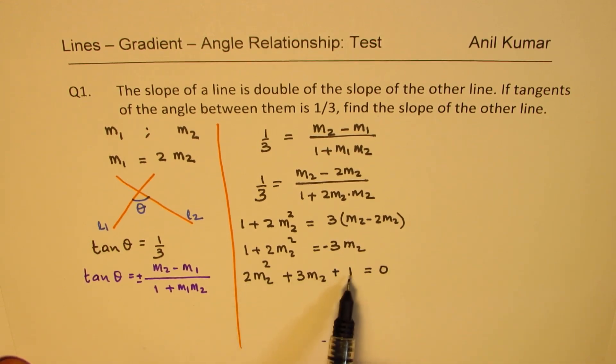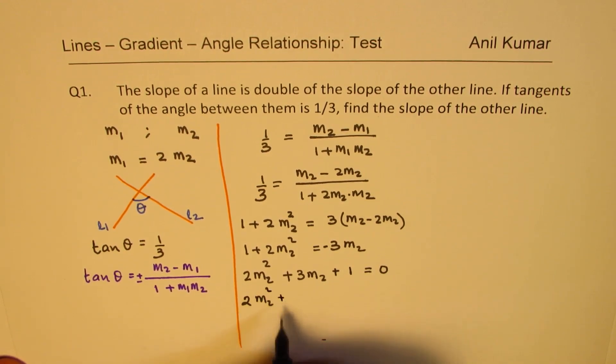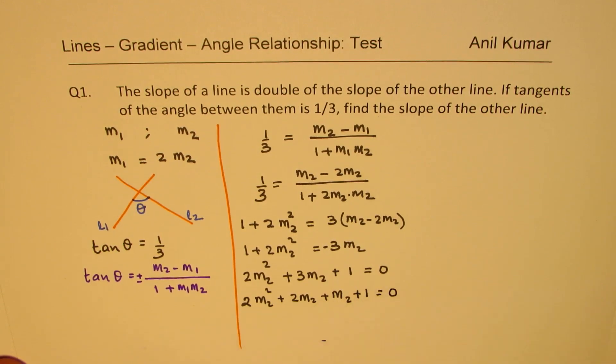We can write this as 2 m2 square plus 3 m2 plus 1 equals to 0. Now, product of 2, sum of 3, we could write this as 2 m2 square plus 2 m2 plus m2 plus 1 equals to 0.